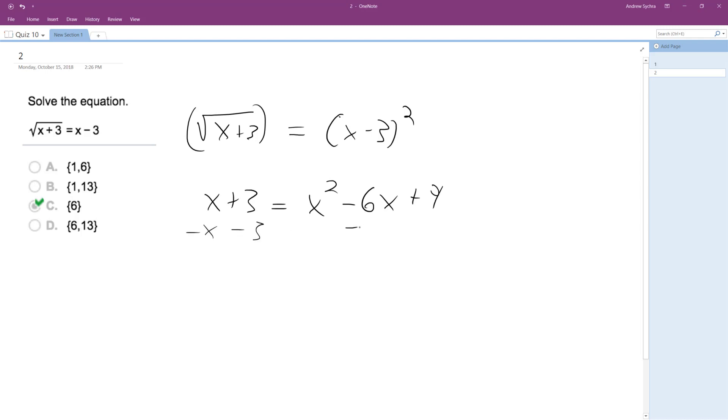Subtract x and subtract 3 from this side, so minus x minus 3. So we end up with x squared minus 7x plus 6 equals 0. And this factors out to be x minus 6 and x minus 1, which is x is equal to 1 and 6.